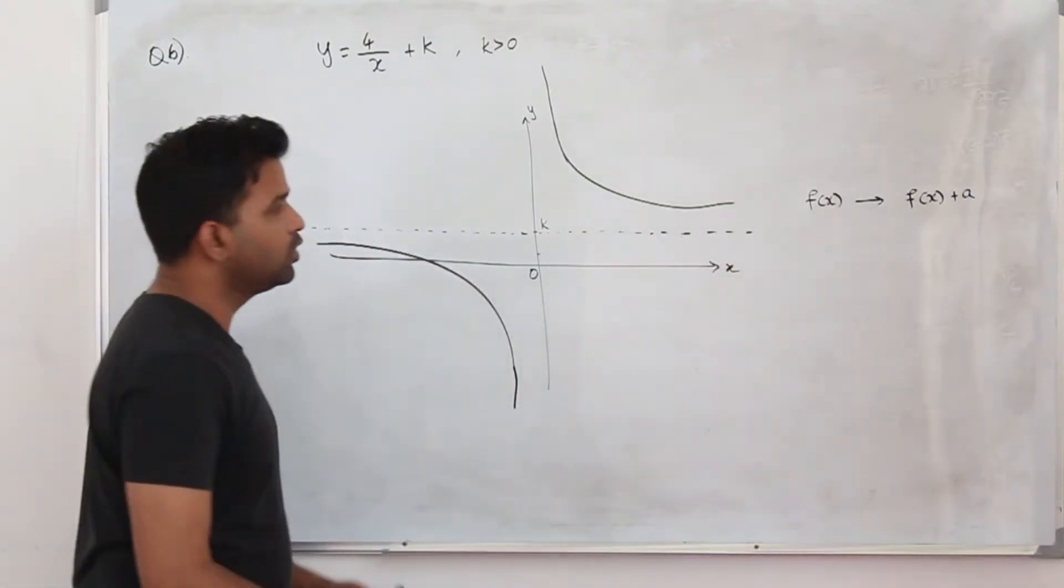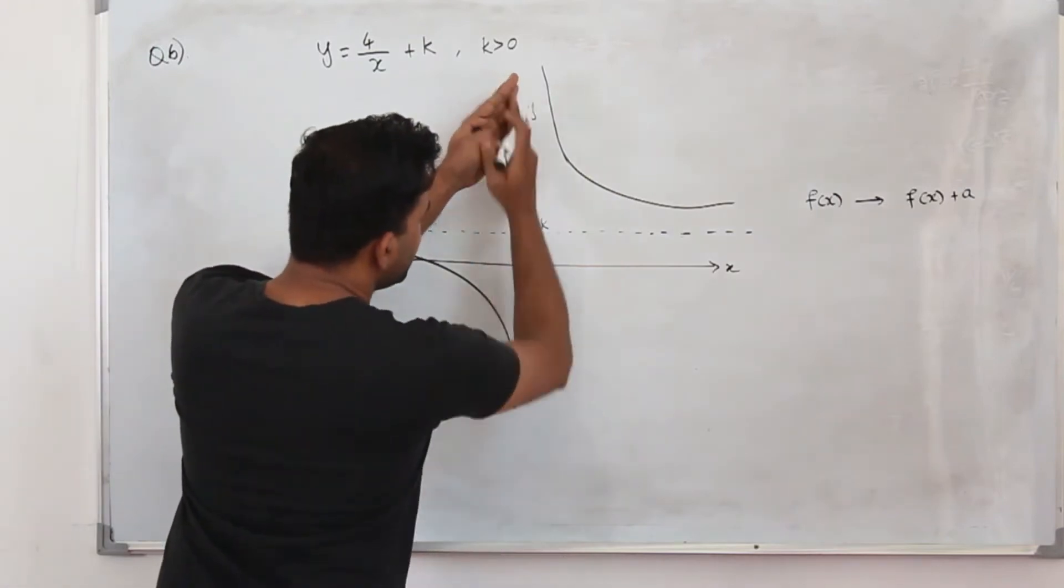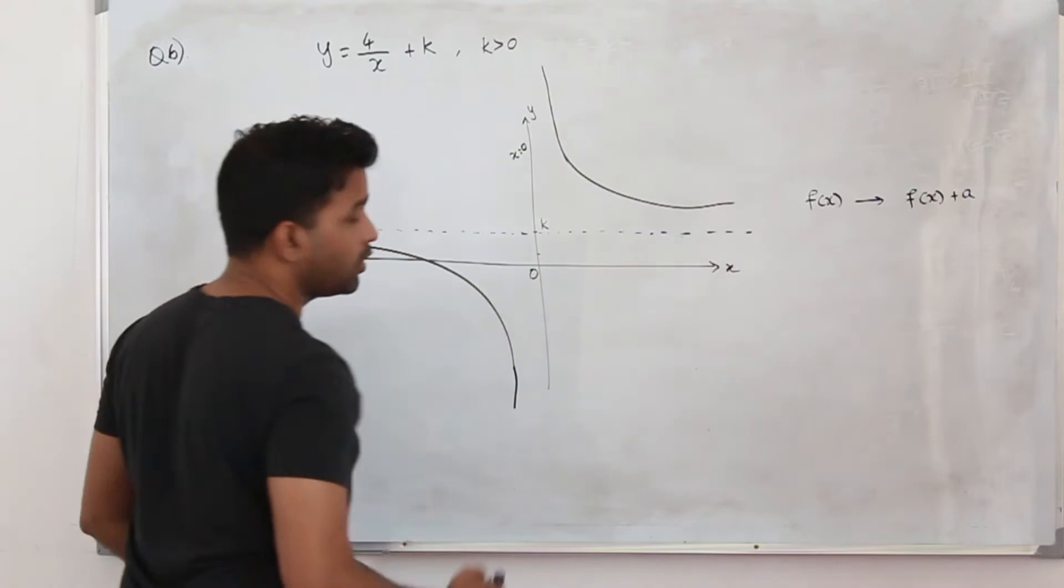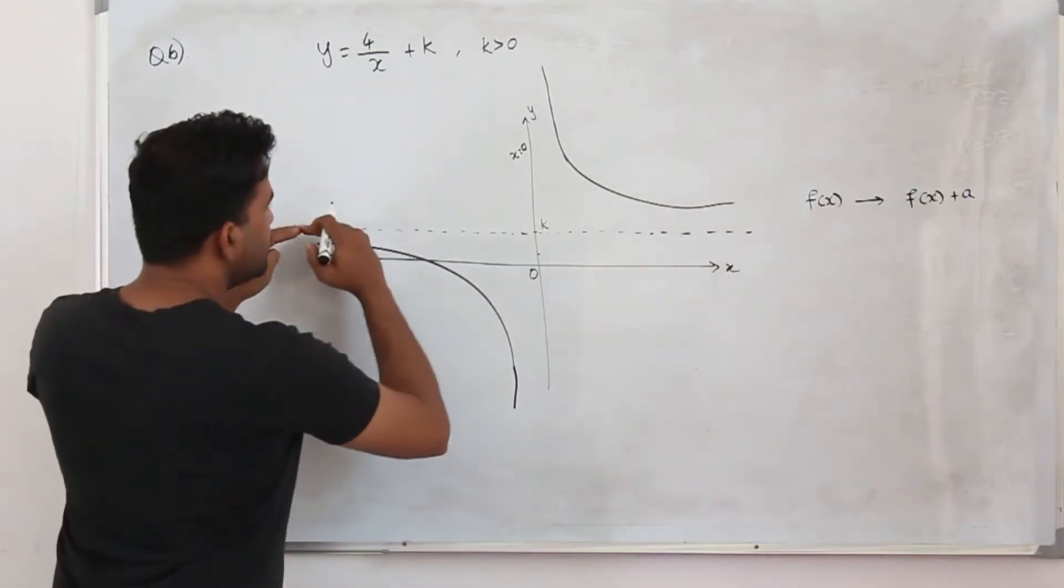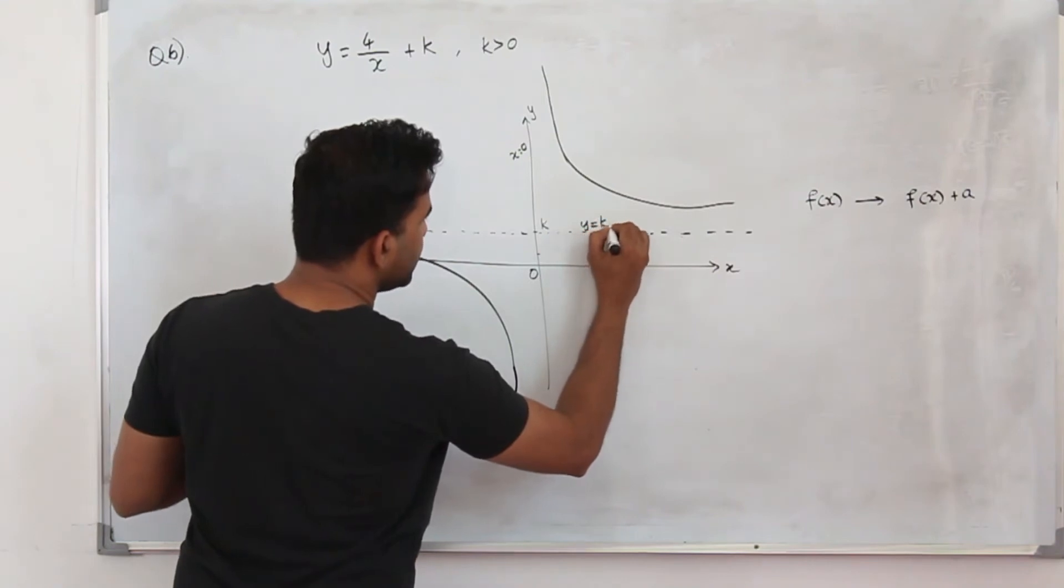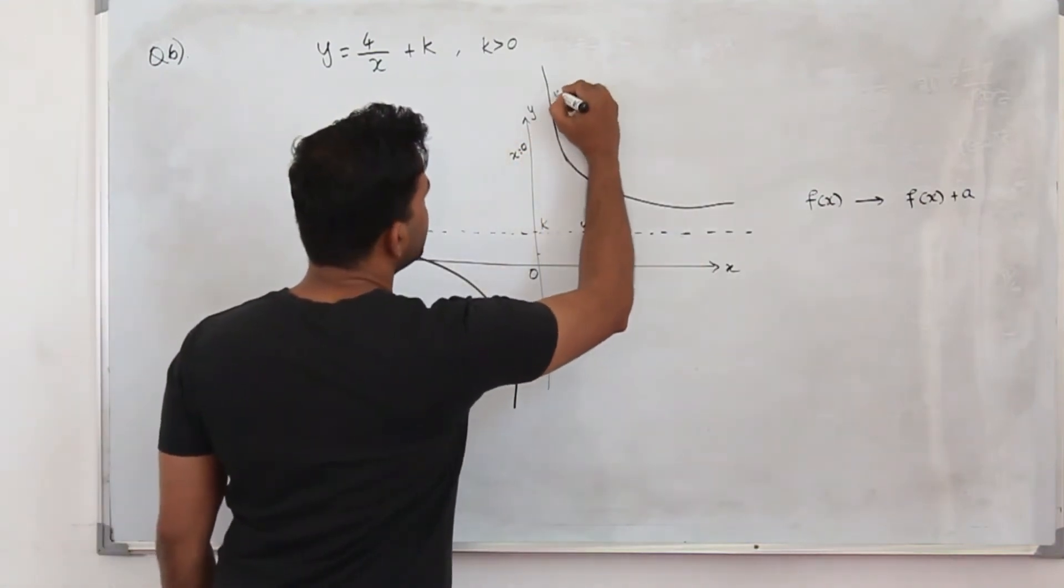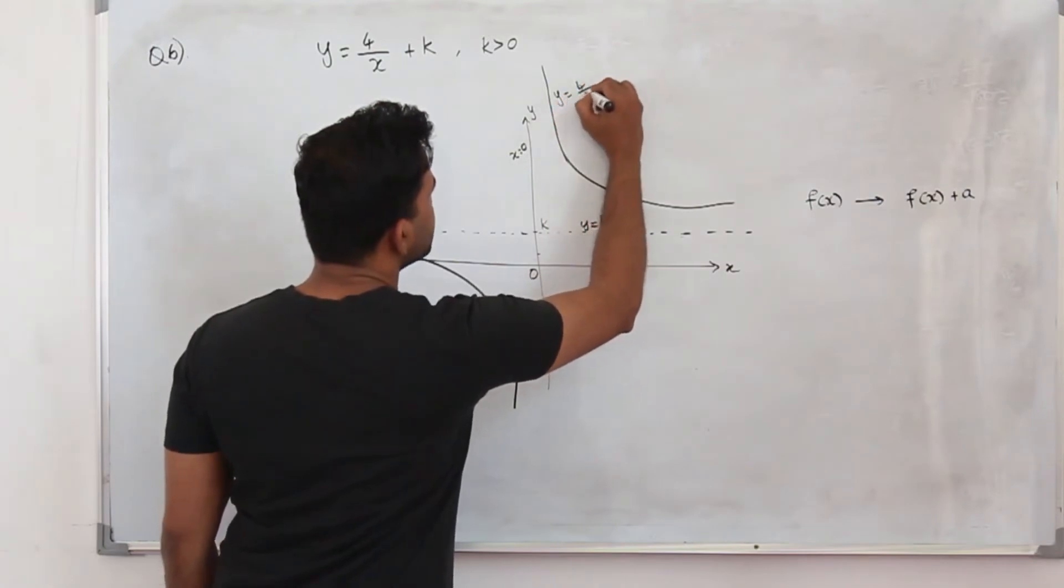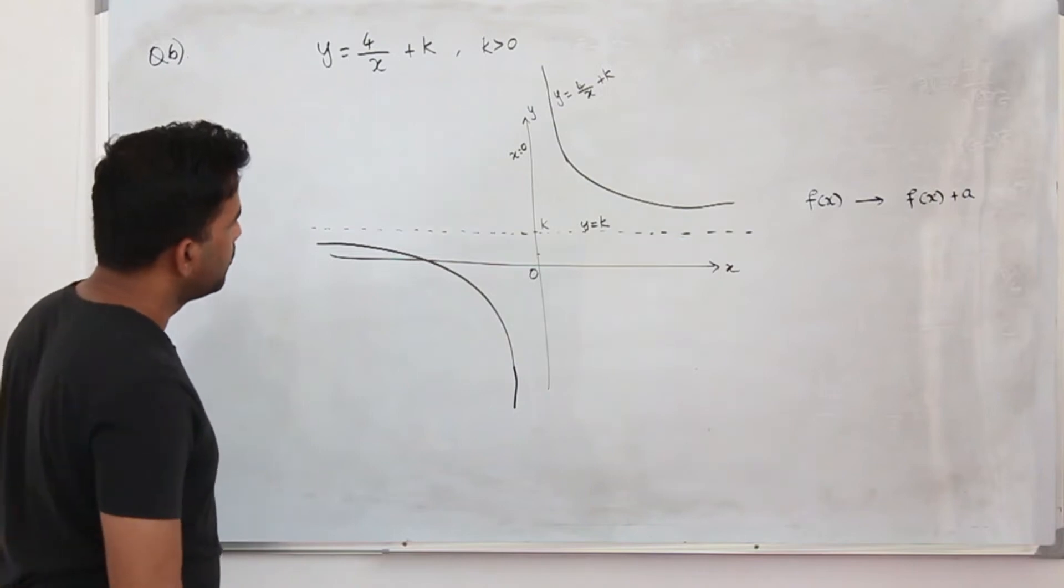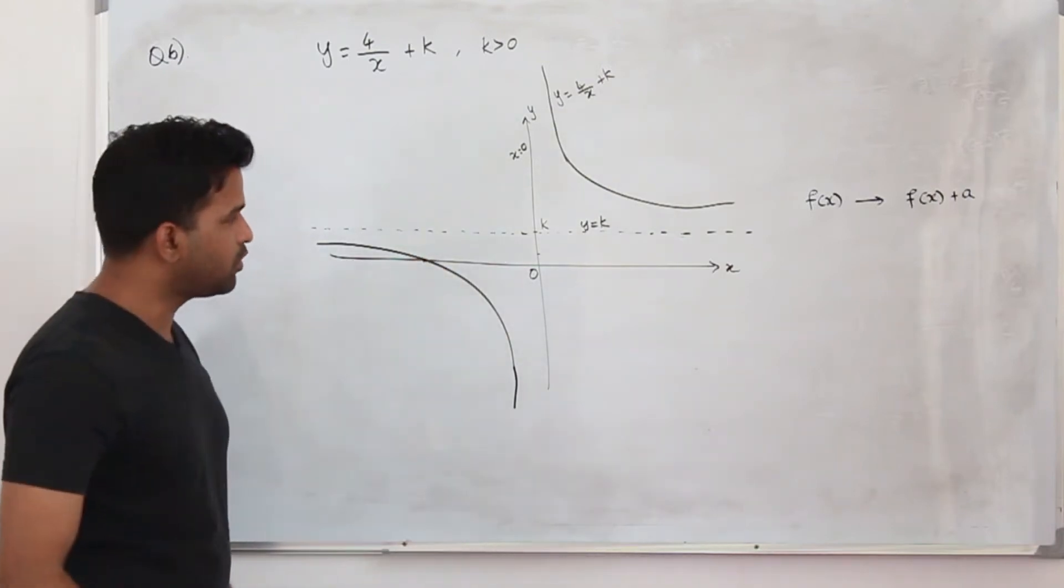We don't know the value of k, but your vertical asymptote is the same, y-axis or x is equal to 0, the equation of y-axis. And the horizontal asymptote is y equals k, the equation of this line. And label the graph. It's y equals 4 upon x plus k. And how about this point? We don't know this point, right?